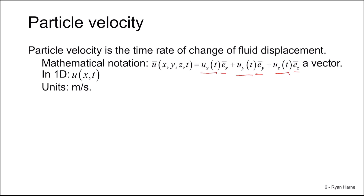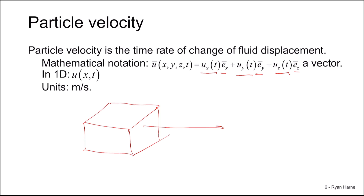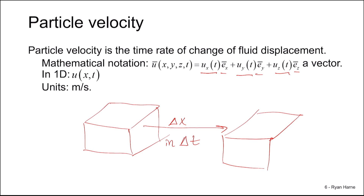We can sketch out particle velocity in a simple way. We have the fluid particle that translates delta x in delta time, so the particle is now displaced, with no volumetric changes assumed here. So our particle velocity is then related to delta x and delta t in the limit of small deltas. This is our second acoustic variable.